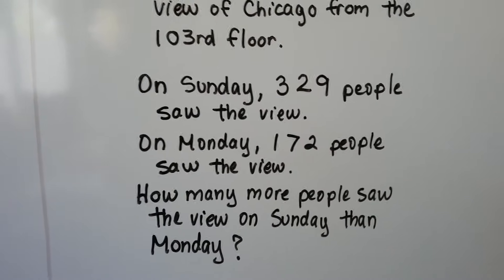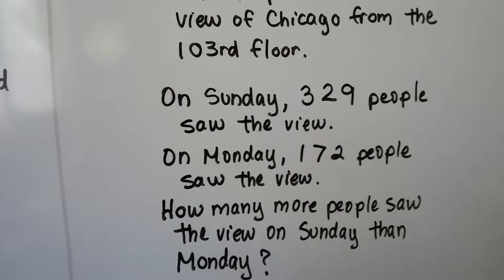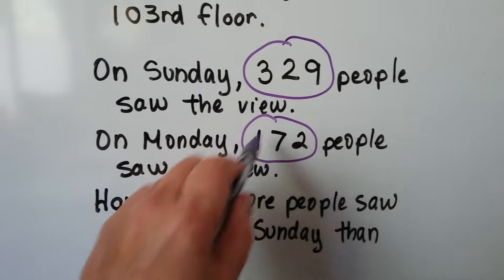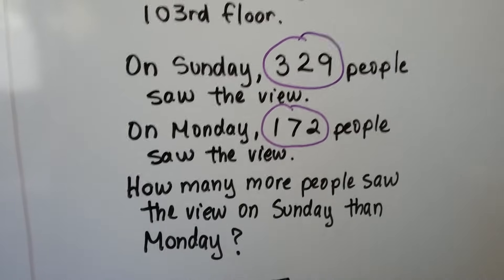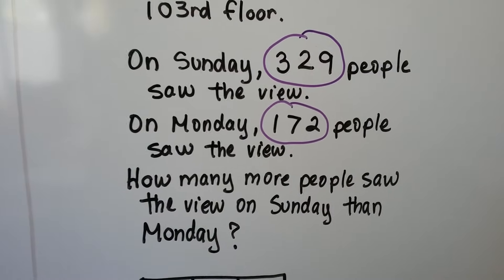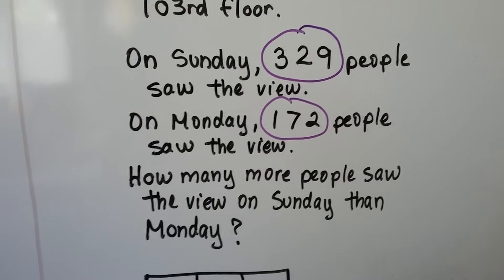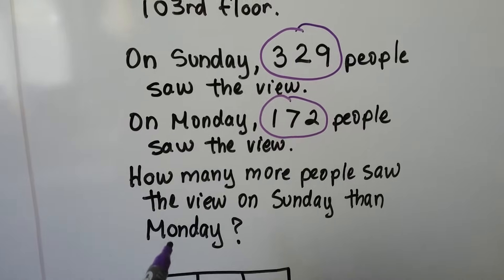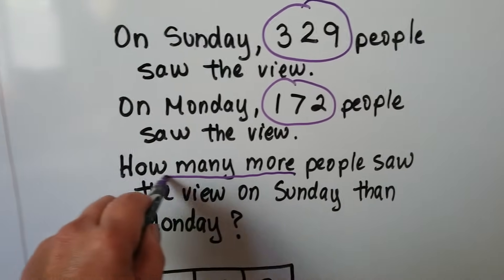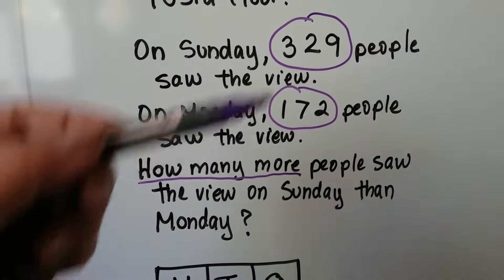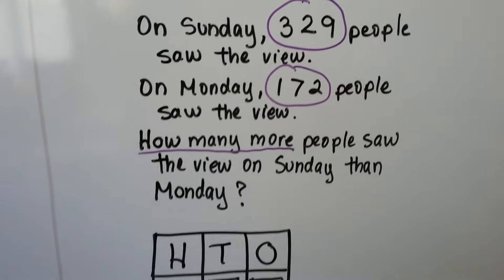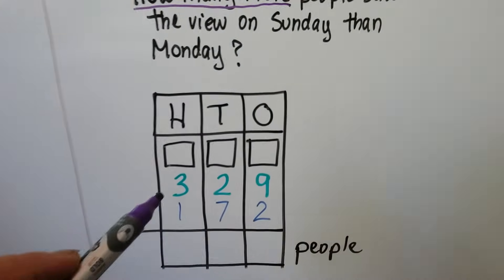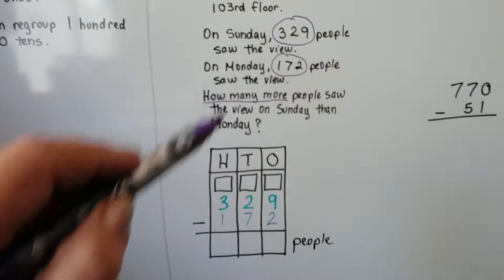How many more people saw the view on Sunday than Monday? We have a word problem, so we circle the important numbers: 329 for Sunday and 172 for Monday. Is this addition or subtraction? The clue words are 'how many more,' which tells us we need to find the difference between these two numbers — we need to subtract.